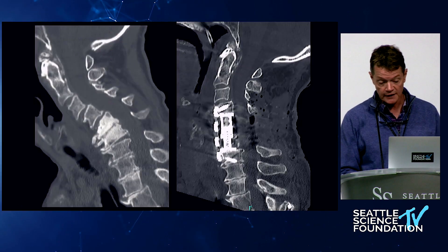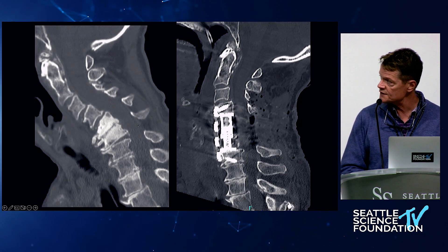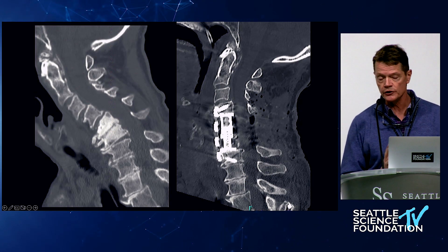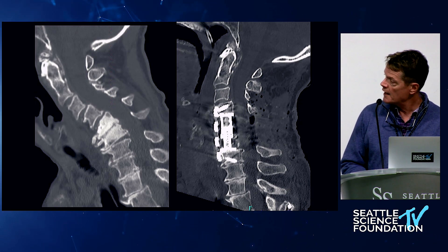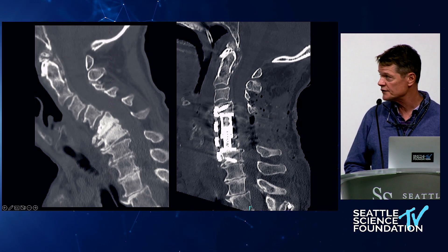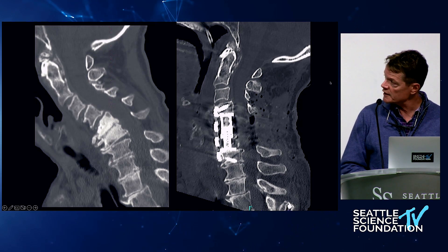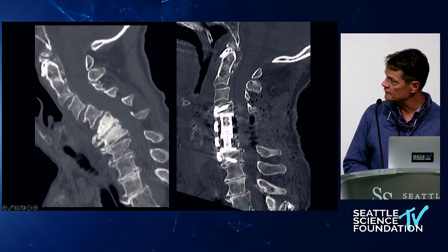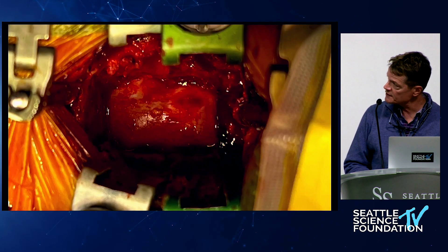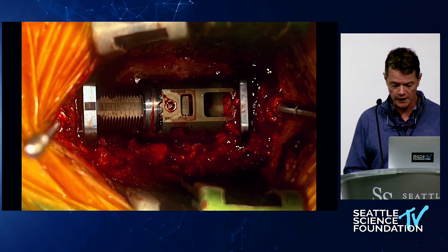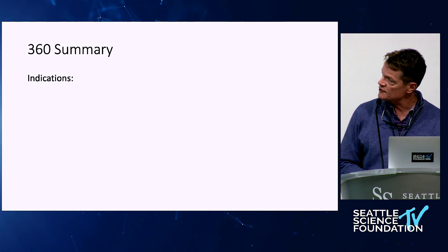A delayed trauma case: a patient with a missed facet subluxation presented three months later with radicular pain. This case demonstrates the remarkable reduction achievable with an expandable anterior cage during corpectomy. This also illustrates why, when going 360 with kyphotic deformity, I prefer to do anterior first — it provides the most reduction. If posterior screws were already in place, fighting them while trying to expand the cage would compromise the construct.